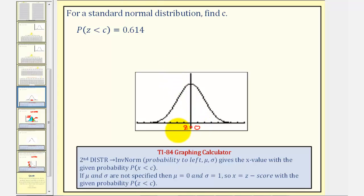So if the probability to the left is 0.614, let's say the Z-score is maybe somewhere in here, where the Z-score equals C, then the probability of Z being less than C would be the same as the area to the left, which we know is 0.614.